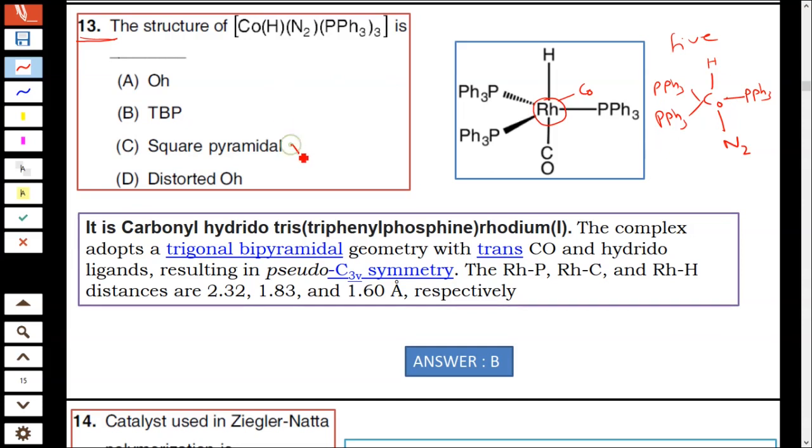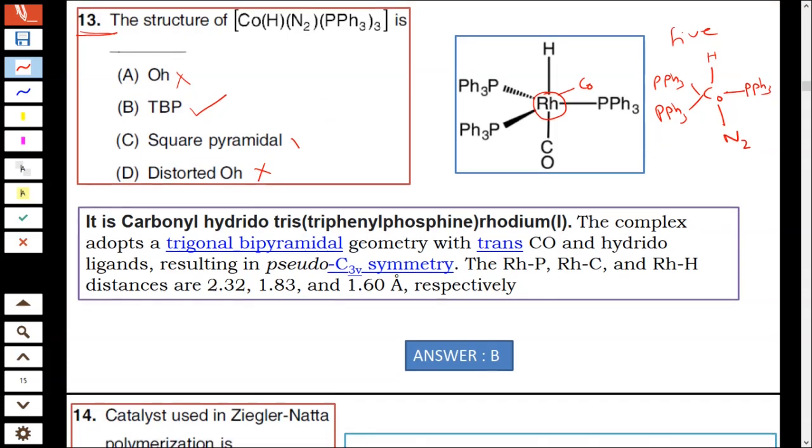Hence option B is correct, trigonal bipyramidal structure TBP. It is not square pyramidal, it is 5-coordinated, it is not octahedral, it is not distorted octahedral, it is a trigonal bipyramidal structure.